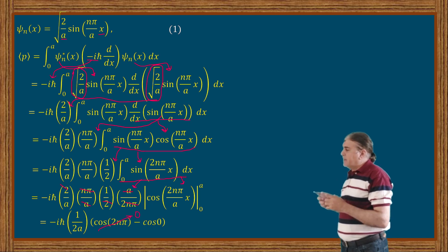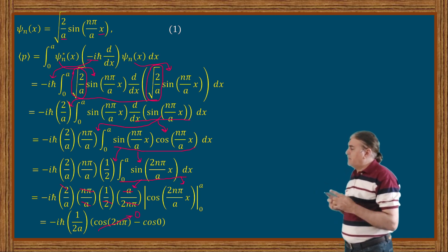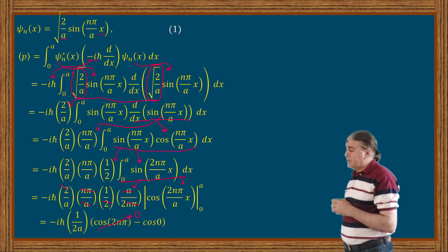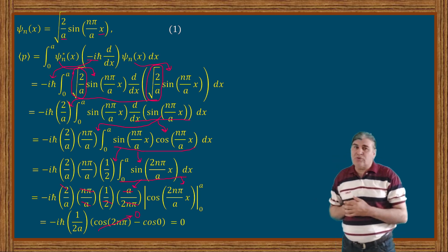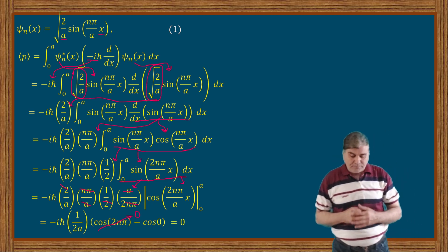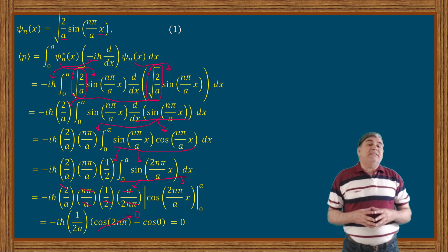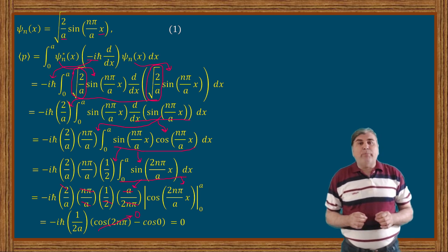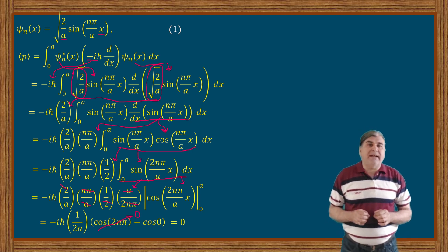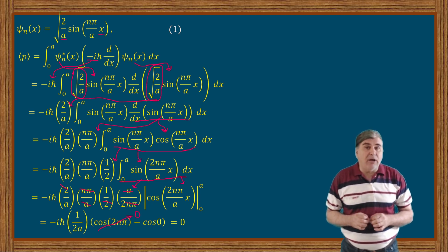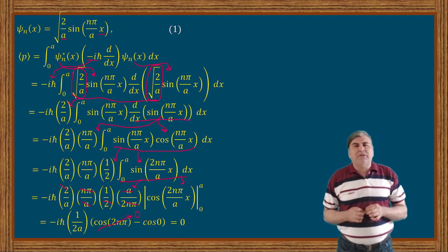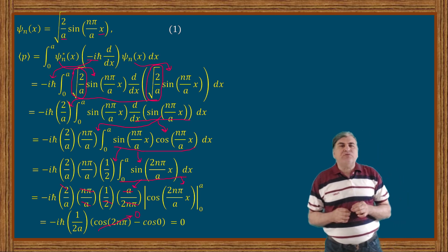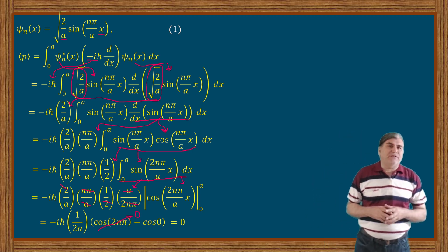The terms inside the last set of brackets is zero, which reduces the whole result to zero. This means that the expectation value of momentum of a particle inside an infinite potential well is always zero. This zero result leads to two very important questions.